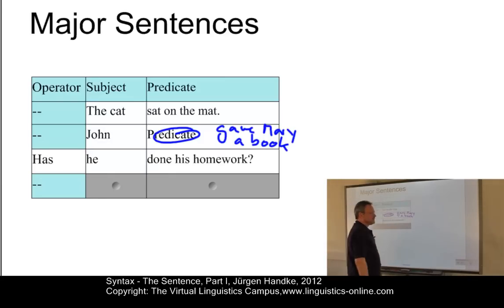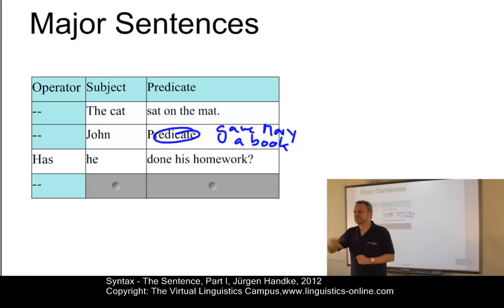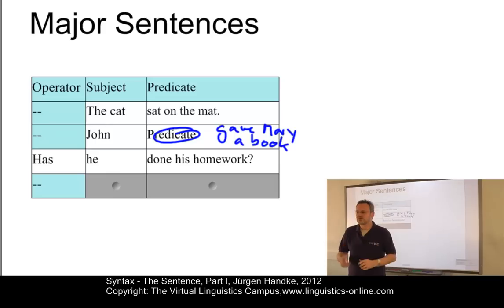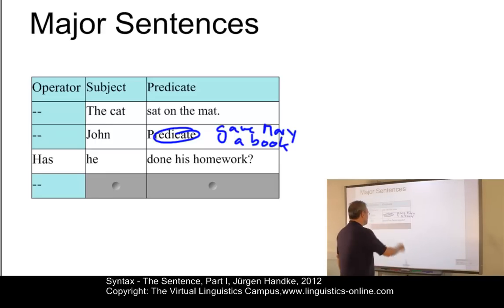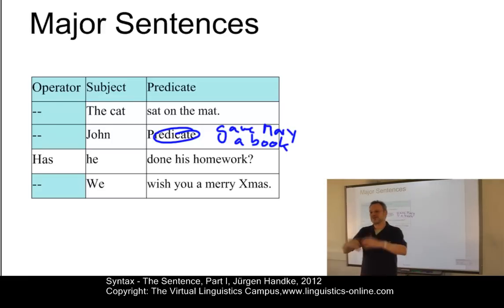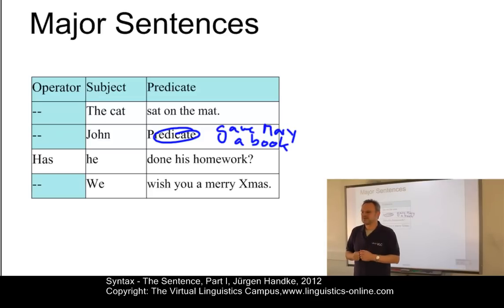Here we have something with an operator: "Has he done his homework?" Subject "he," predicate "done his homework," and "has" has been moved to the beginning of the sentence. Inversion is the operation where we have an operator, a subject, and a predicate. We can even use "Merry Christmas" — "We wish you a Merry Christmas" — but now it is embedded within a major sentence with a subject-predicate structure.